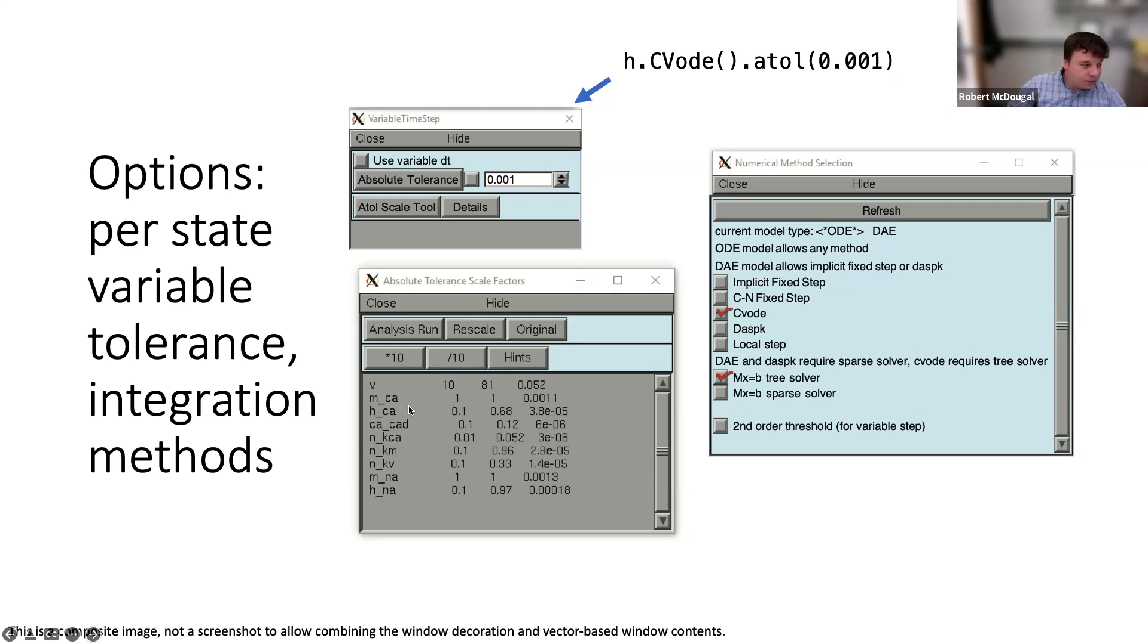It looks at all the different state variables and picks scale factors. The first column is easiest to interpret—different scale factors for actual tolerance on a per state basis. For example, mca gets a scale factor of one, meaning it will literally use the tolerance of 0.001 as the error allowed. Voltage gets a scale factor of 10, so it's not 0.001—it loses a zero, becomes 10 times bigger because voltage range is bigger, so a change is relatively less important.